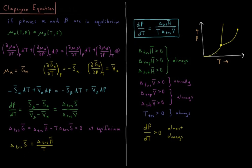This allows us to arrive at the Clausius-Clapeyron equation. For a coexistence curve, the derivative dP/dT equals the molar enthalpy of transition divided by the temperature of the transition times the molar volume change of transition.